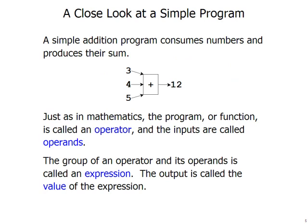We'll take a look at a simple program to see how it works in more detail. Here's a simple addition program: addition consumes numbers and produces their sum. And just as in mathematics, the program or function is called an operator, and the inputs are called operands. In this example, the plus is our operator, and three, four, and five are operands. The group of an operator and operands together is called an expression, and the output is called the value of the expression. So in this example, three plus four plus five is the expression, and twelve is the value of that expression.